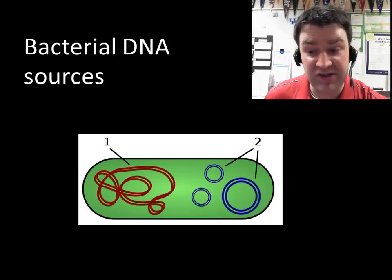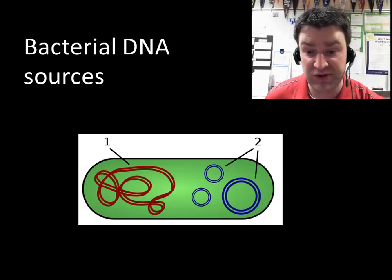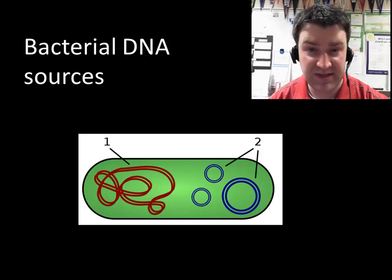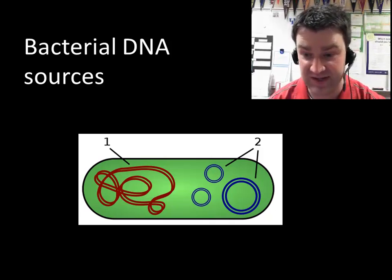So how do bacteria have their DNA? Recall that they have it in two basic forms. Most of their DNA exists in the very large circular chromosome with most of its genes, but it also has some DNA and genes outside of the main chromosome in small little circles called plasmids.